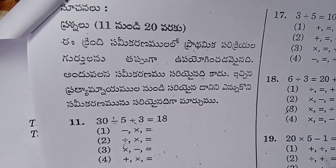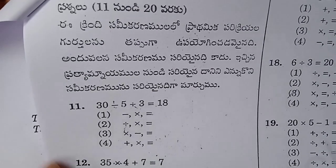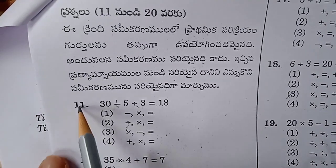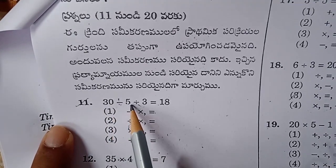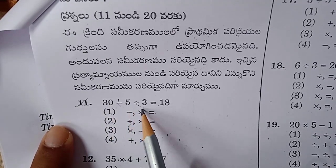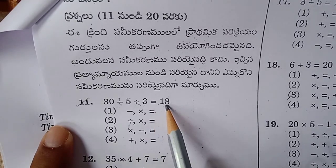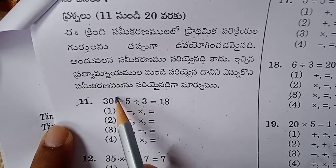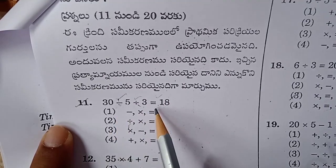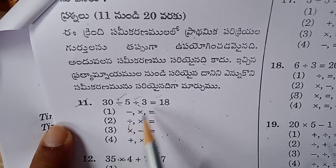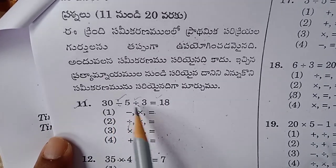It is very simple. We have 10 out of 10 marks. Let's see the question here: 30 minus 5 divided by 3 equals 18. Minus and divided by — we need to replace these operators in the equation.